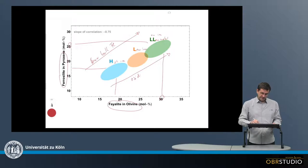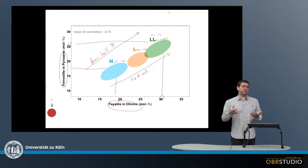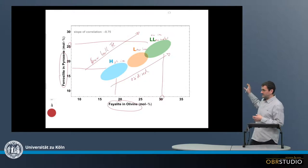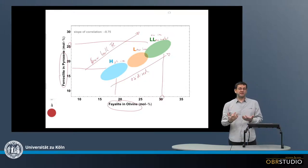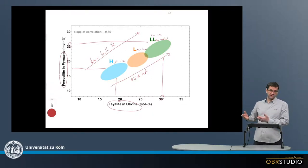So the LL chondrites are more oxidized compared to the H chondrites. The comparatively little iron in the LL chondrites is to a much higher degree oxidized than in the H chondrites. Therefore, the LL chondrites contain more FeO, which is then located within olivine and pyroxene.